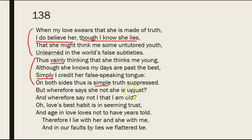So, wherefore says she not that she is unjust? Why doesn't she say that she's untrue? Why don't I say I'm old? Why do we lie if we each know the other one is lying? It just works better if we let each other think that the other person is being honest, even though we both know we're lying. Is it cynical? Maybe. Is it also a voice that's been a little bit roughed up, a little bit experienced? Yeah, I think so.